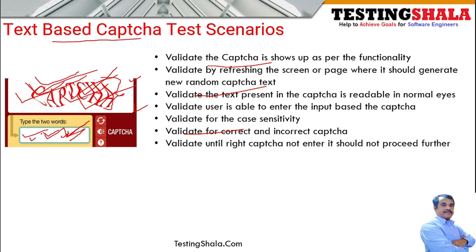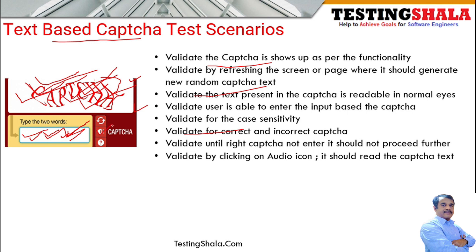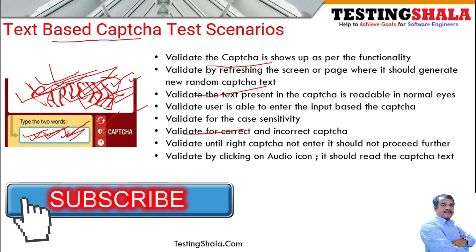There is also an accessibility option: an audio icon for people who have difficulty reading the text. When clicked, the CAPTCHA text is provided in audio format, and after listening, users can enter the text. If you click the refresh button, the CAPTCHA should refresh and show a different text. There is also a help icon that, when clicked, should provide a help mechanism explaining how to operate the CAPTCHA screen.